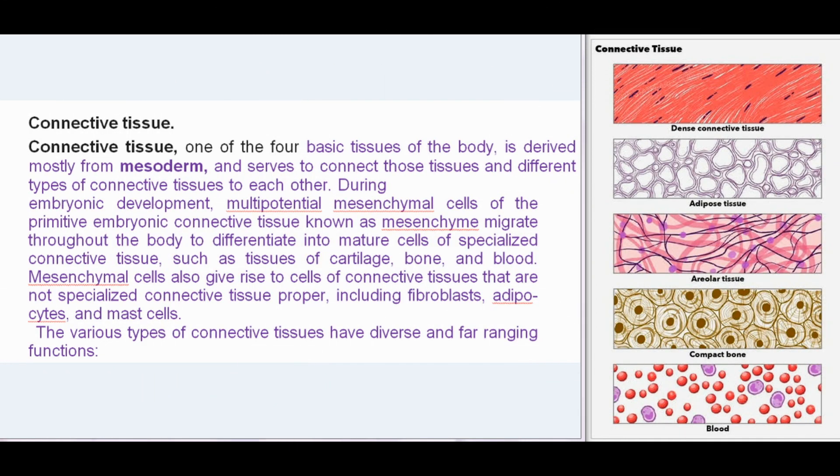Connective tissue, one of the four basic tissues of the body, is derived mostly from mesoderm and serves to connect tissues and different types of connective tissues to each other. During embryonic development, multi-potential mesenchymal cells of the primitive embryonic connective tissue known as mesenchyme migrate throughout the body to differentiate into mature cells of specialized connective tissue such as cartilage, bone, and blood. Mesenchymal cells also give rise to cells of connective tissue proper, including fibroblasts, adipocytes, and mast cells.